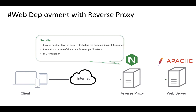From the security angle, a reverse proxy provides another layer of security by hiding the backend server information. This is crucial for security as it can prevent attackers from doing a reconnaissance attack on your environment — basically, the less the attacker knows, the better. A reverse proxy is also able to give some protection against attacks such as the slow HTTP or Slowloris attack. I will give a demo for this attack later.